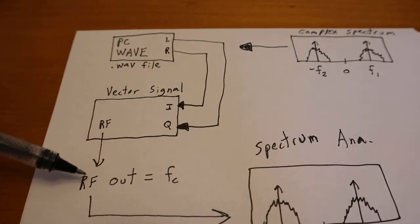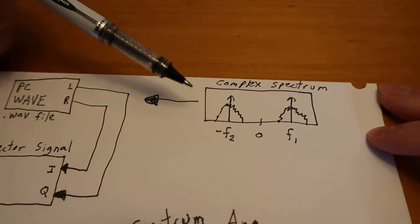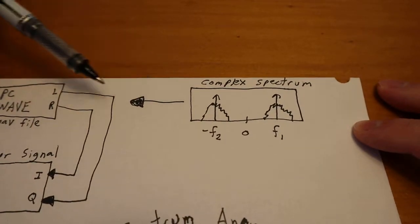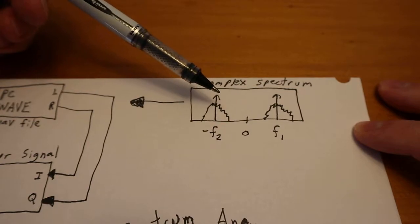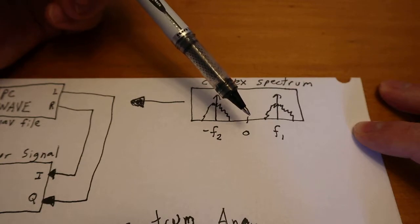And then this would be the RF output that the signal would come out at. So over here is the complex spectrum at baseband, so this would be the spectrum coming out of the PC. And this is the spectrum here, centered around DC.